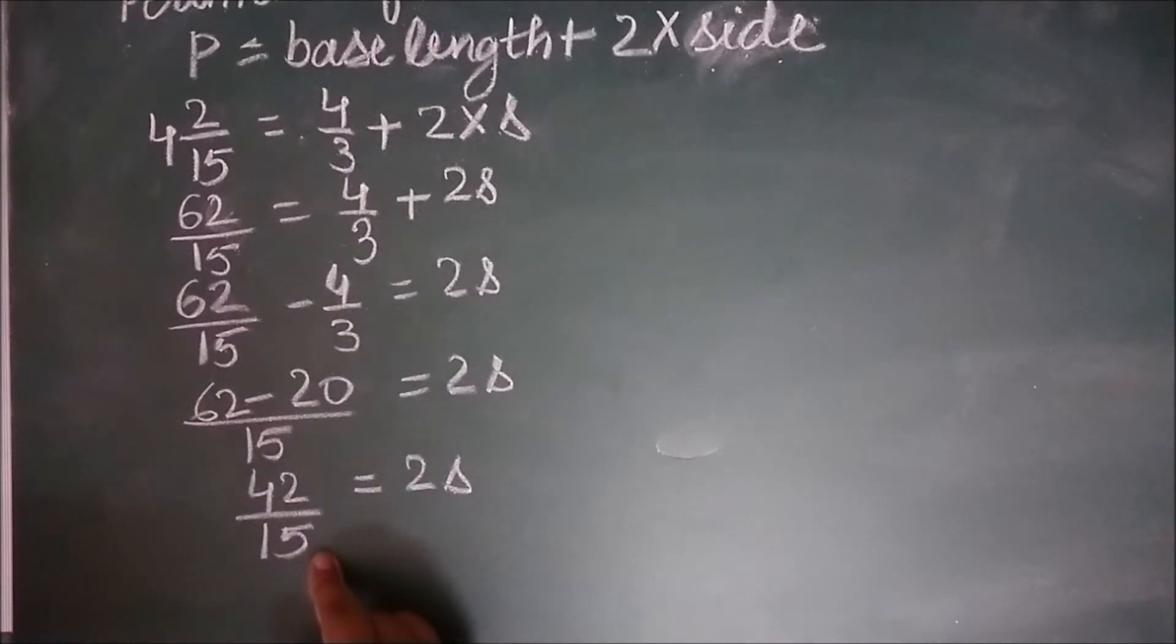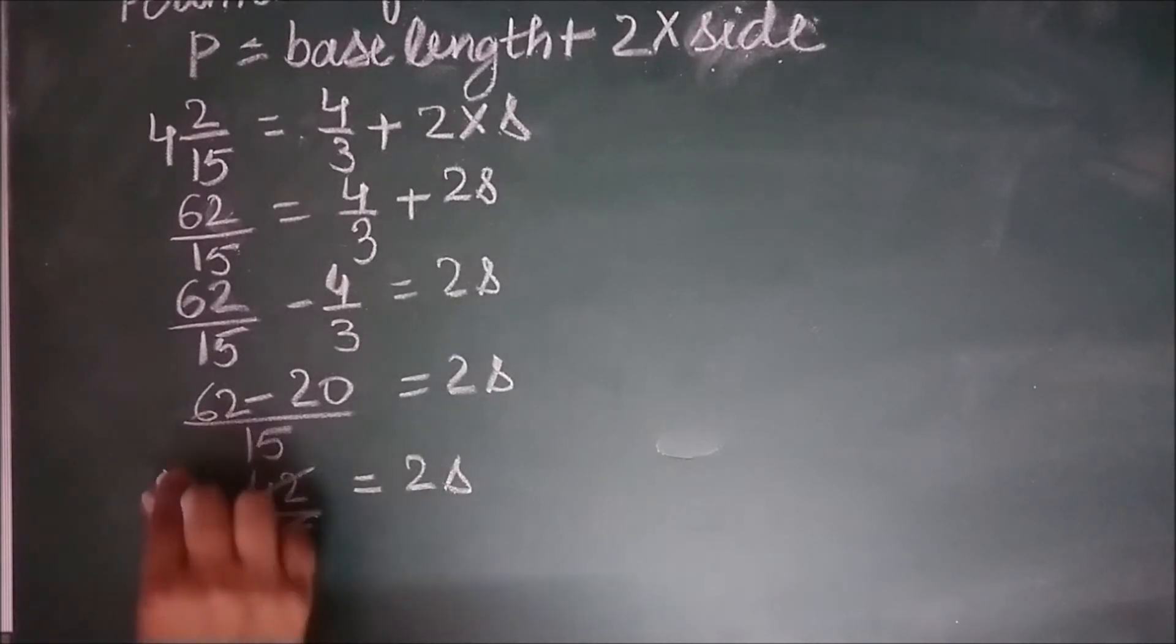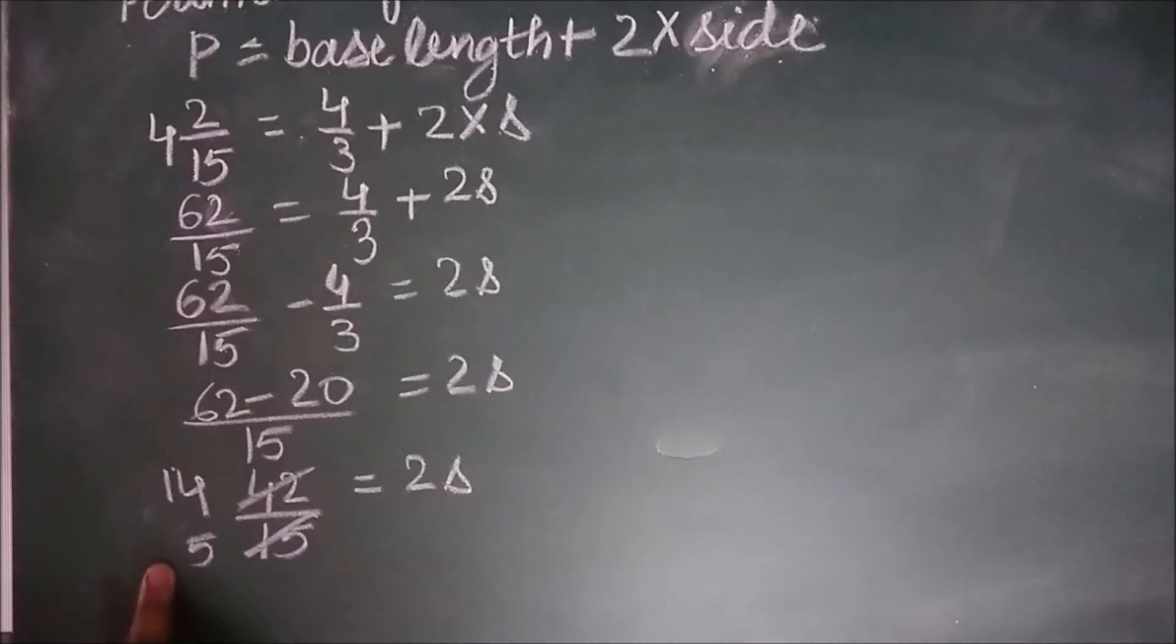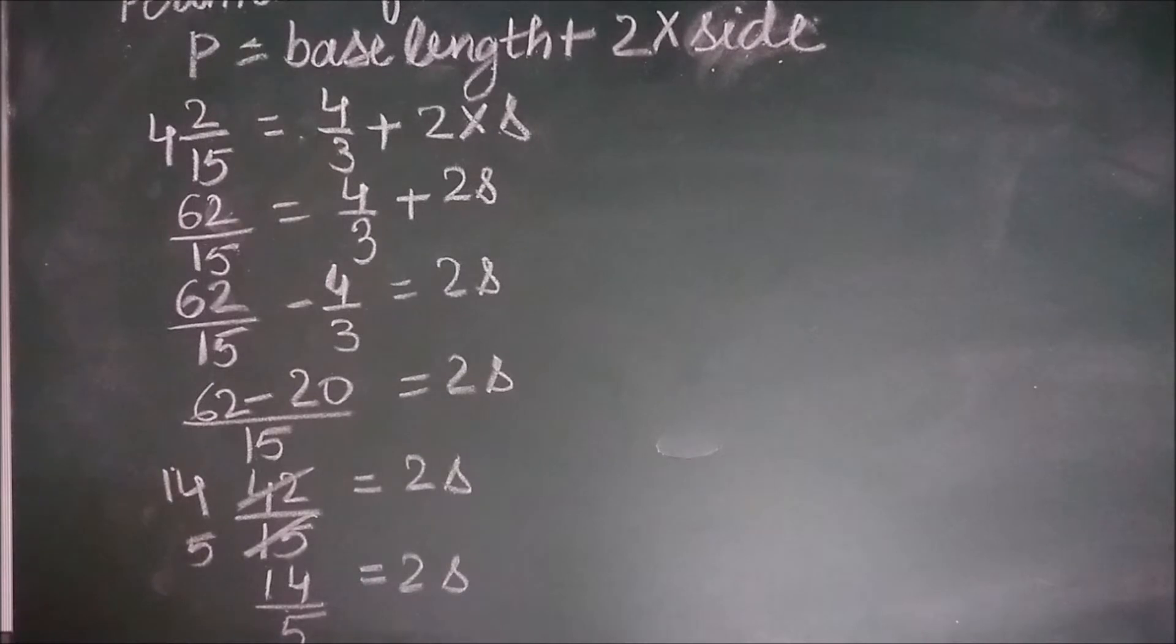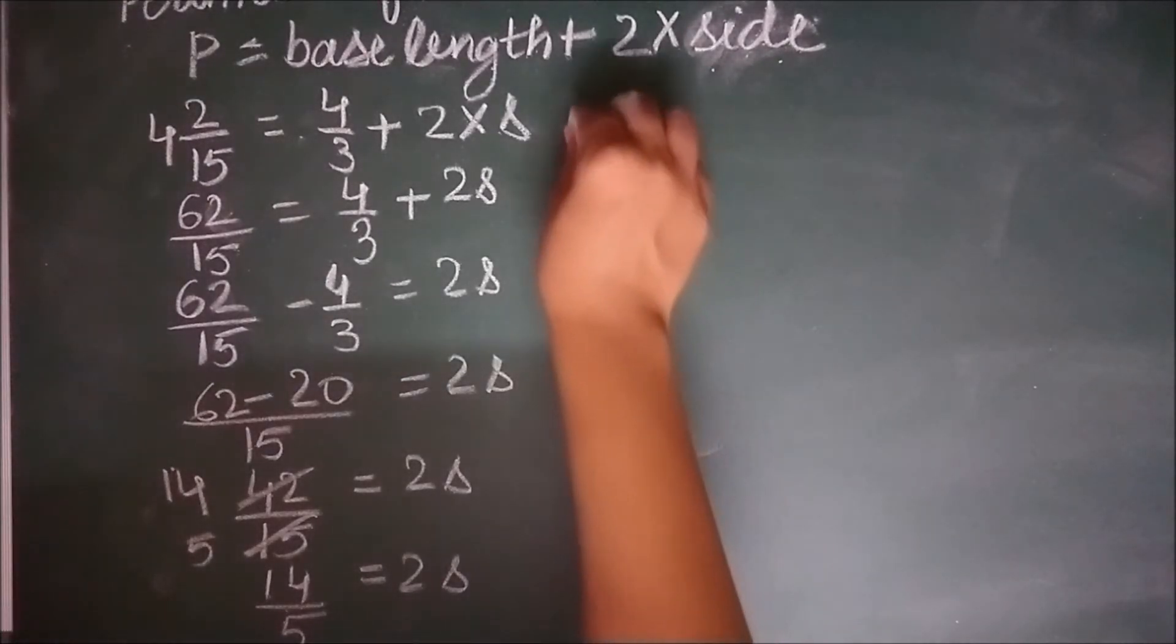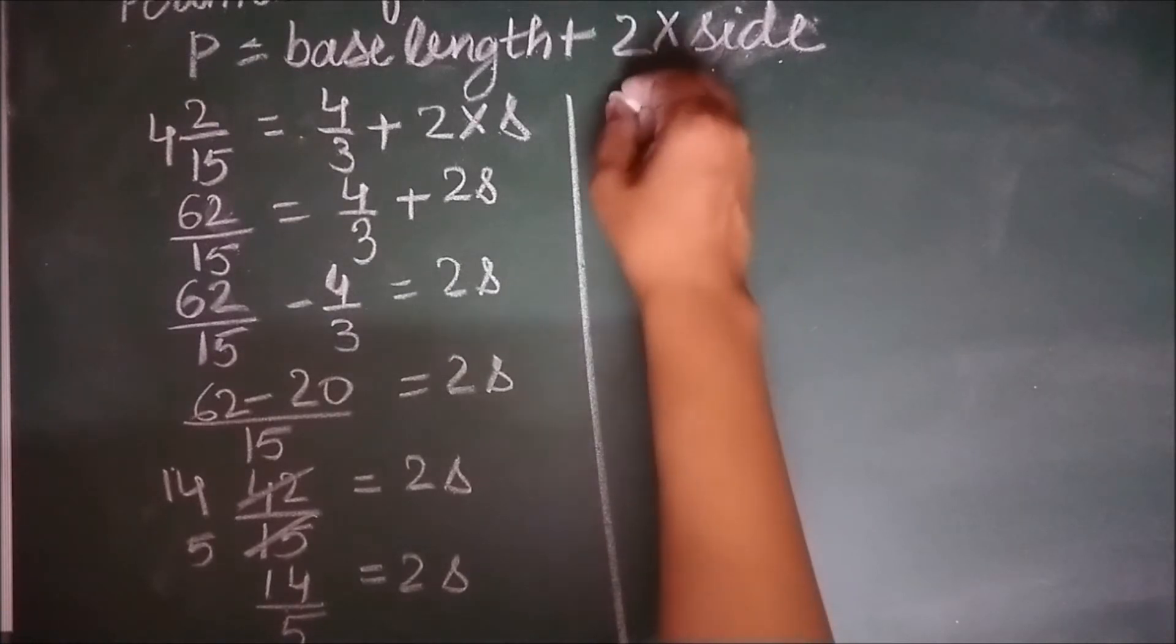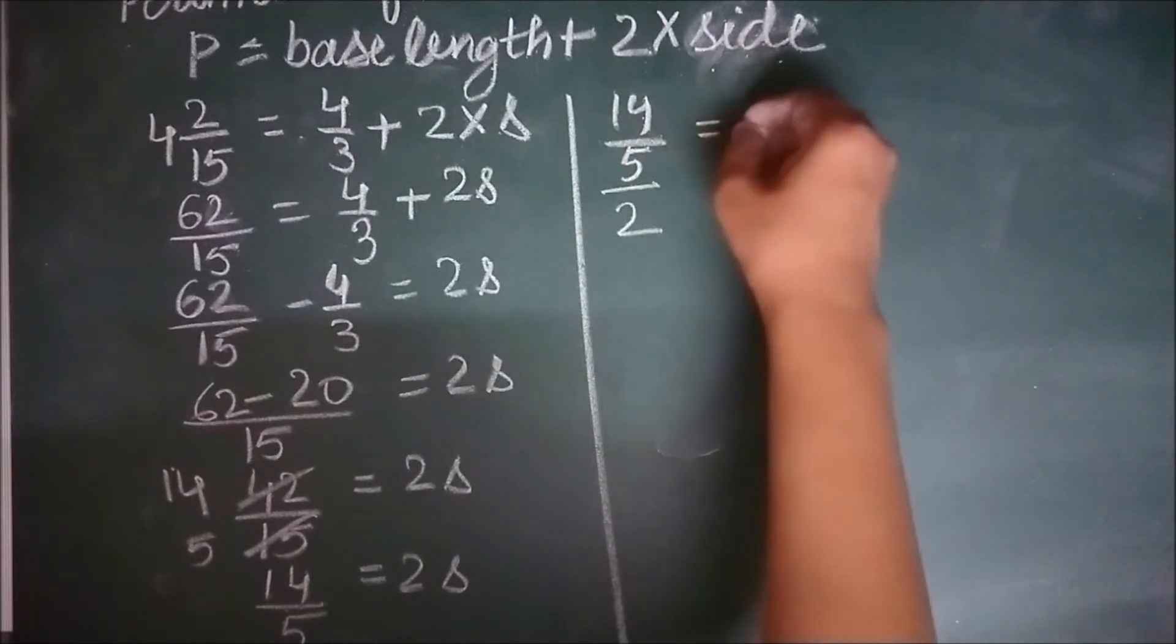Any cancellations possible? Yes. 3 into 5 is 15. 3 1s are 3. 3 4s are 12. So you get 14 by 5. 14 by 5 equal to 2S. Now 2 is an addition here. When it goes to the left hand side, it gets divided. Let me do it here. 14 by 5 by 2 equal to S.